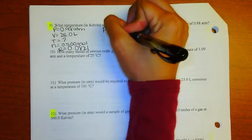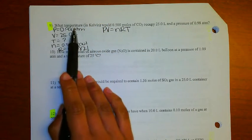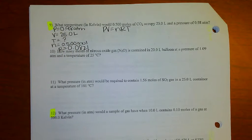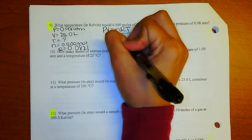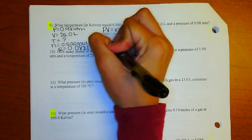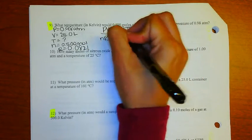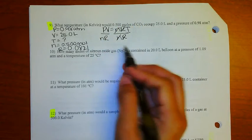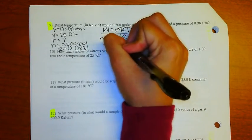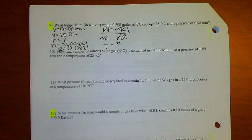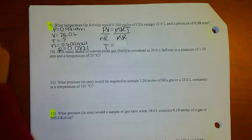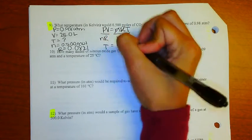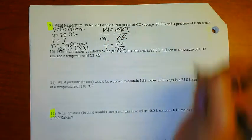Using PV = nRT and trying to find temperature, I need to divide both sides by nR to get T by itself. The n's and R's cancel on the right side, leaving T = PV / nR.